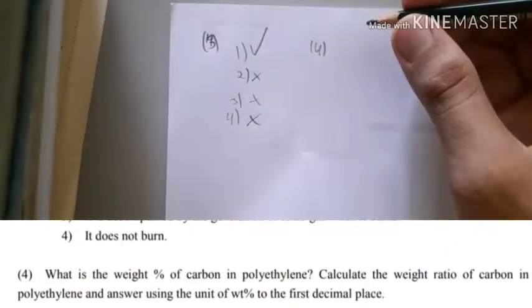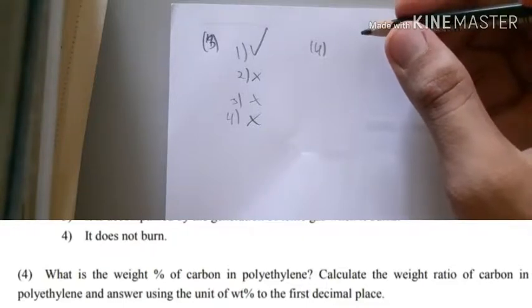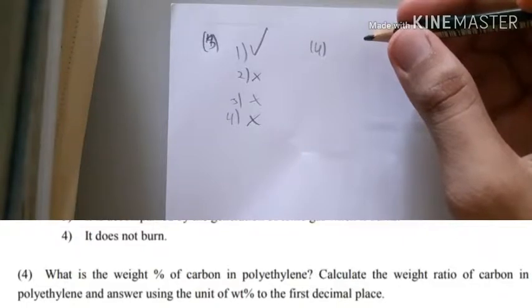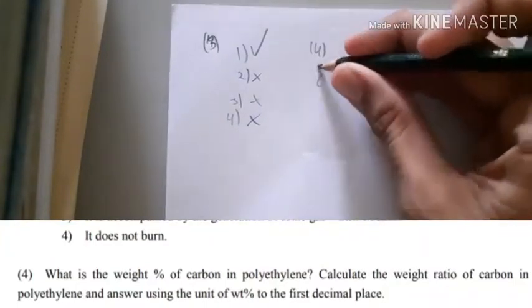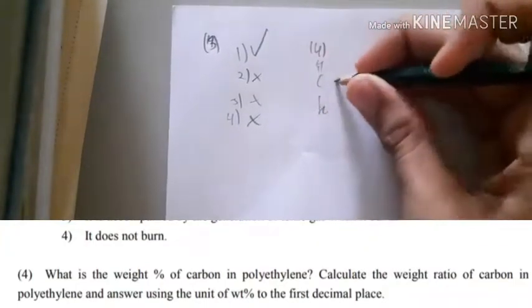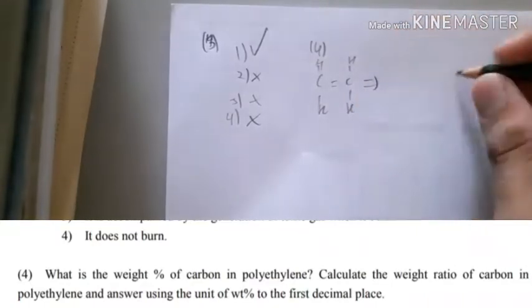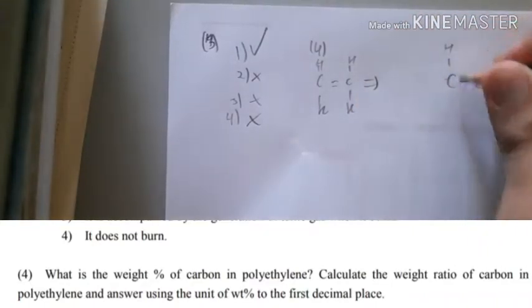What is the weight percent of carbon in polyethylene? Calculate the weight ratio of carbon in polyethylene and answer using weight percent to the first decimal place. Polyethylene is simply when you have ethene, it turns into polymer.